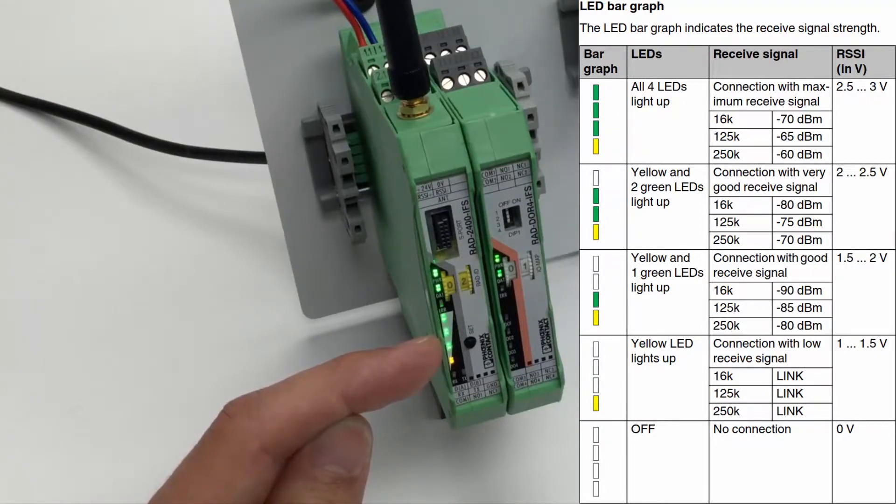The green bar graph LEDs at the Radioline master are only active at a point-to-point wireless connection. In wireless networks with more than one Radioline slave, only the yellow link LED is on at the Radioline master.